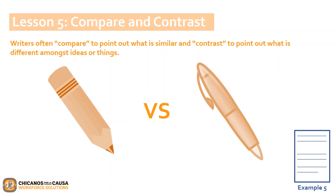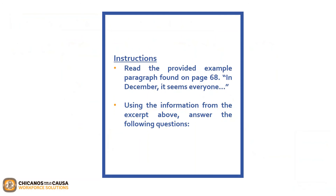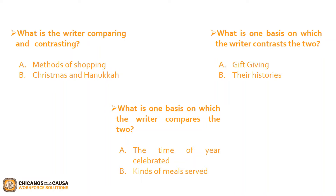Let's take these same skills and practice them while reading the provided example. You can read the provided example paragraph found on page 68 — it starts with 'In December, it seems everyone...' Please pause the video to read this passage, then click play when you are ready to continue to the questions. Let's review the three questions on the screen, one at a time. From the reading, what would you say the writer is comparing and contrasting? A, methods of shopping; or B, Christmas and Hanukkah? The similarities and differences between the two holidays are the focus of the discussion — the two methods of shopping are merely mentioned. So the correct answer is B, Christmas and Hanukkah.